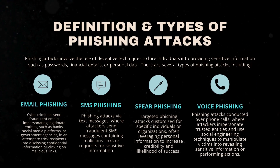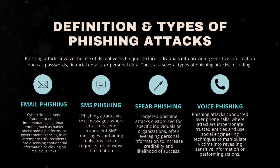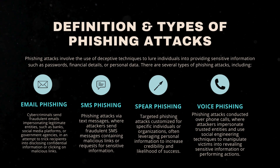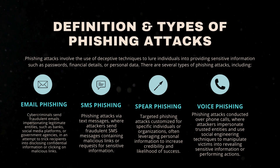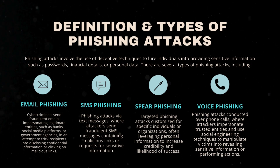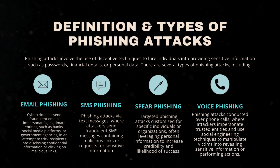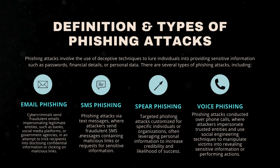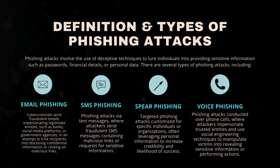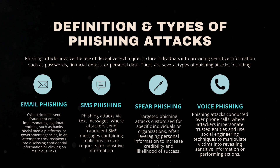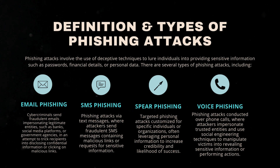Definition and Types of Phishing Attacks. Phishing attacks involve the use of deceptive techniques to lure individuals into providing sensitive information such as passwords, financial details, or personal data. There are several types of phishing attacks, including email phishing — where cybercriminals send fraudulent emails impersonating legitimate entities such as banks, social media platforms, or government agencies, in an attempt to trick recipients into disclosing confidential information or clicking on malicious links.